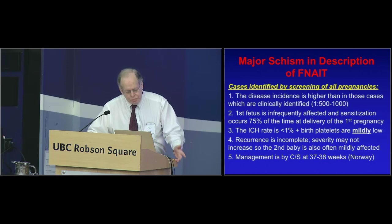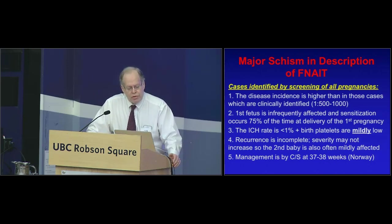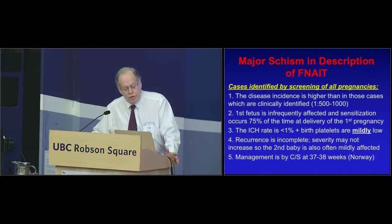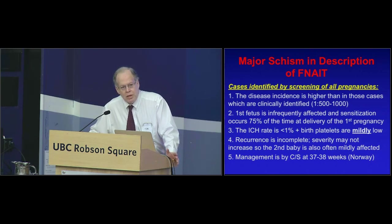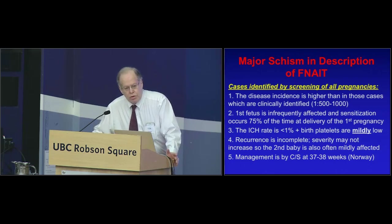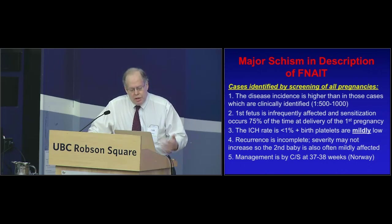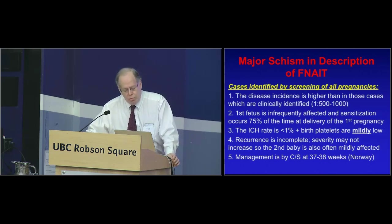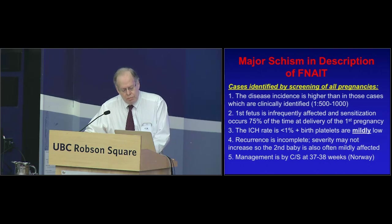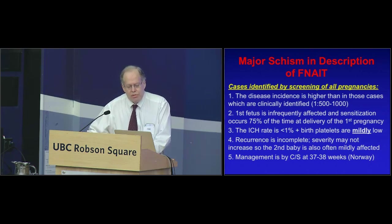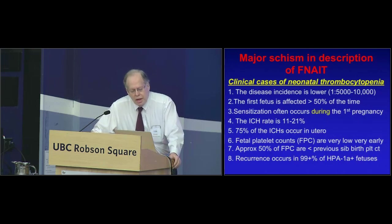In the screening-based view, FNAT is maybe one-tenth or one-fifth as frequent as RH disease. The first fetus is infrequently affected. The ICH rate is very low, birth platelets are often not very low, and recurrence can be incomplete — the second baby may not be much worse affected than the first. Norway's current protocol, a very wealthy country of about four million, does routine screening of all pregnancies, doing elective caesarean section at 37 to 38 weeks and identifying HPA1A-negative mothers who have antibody.